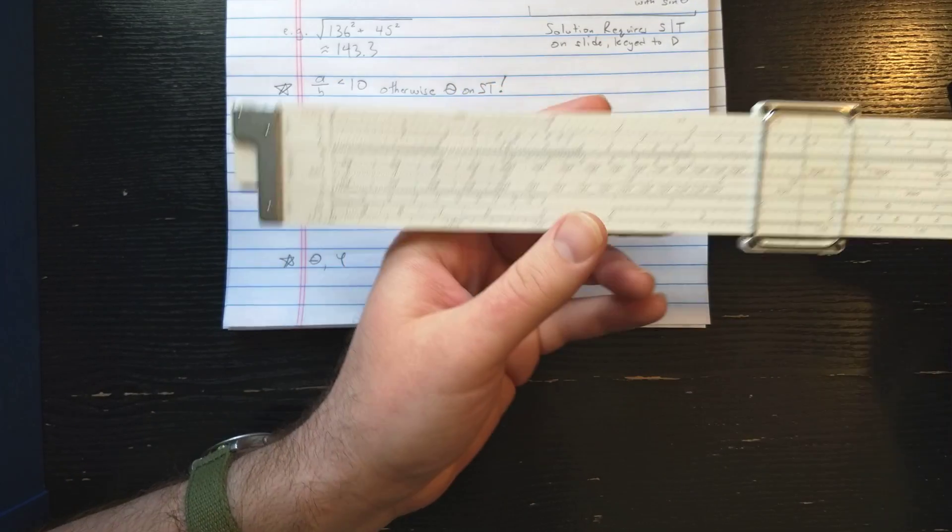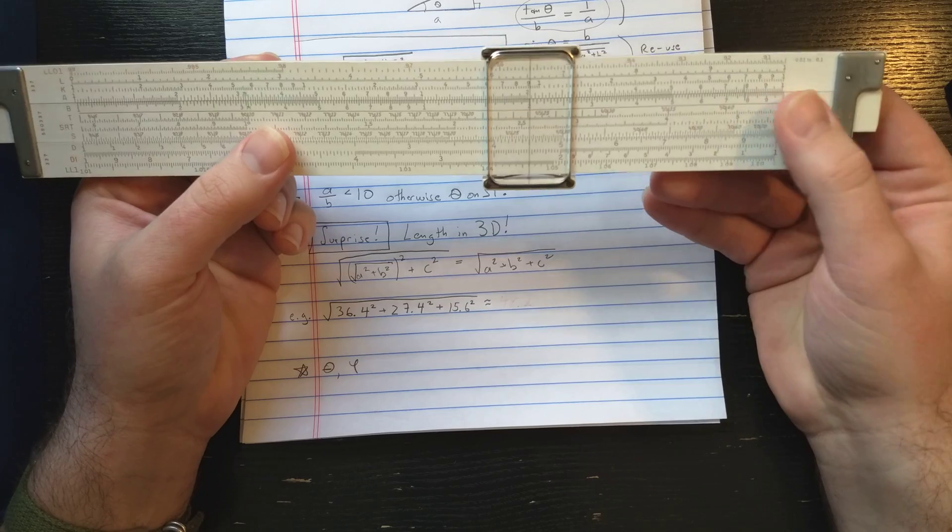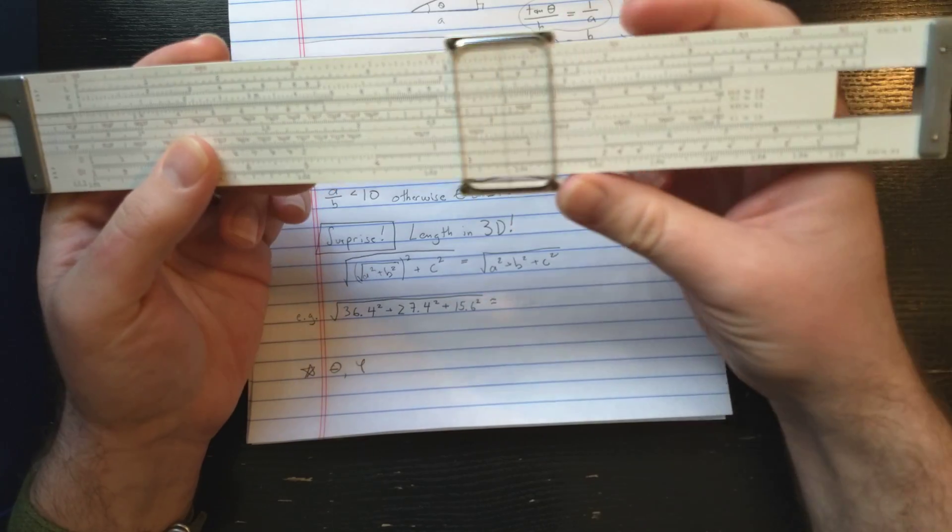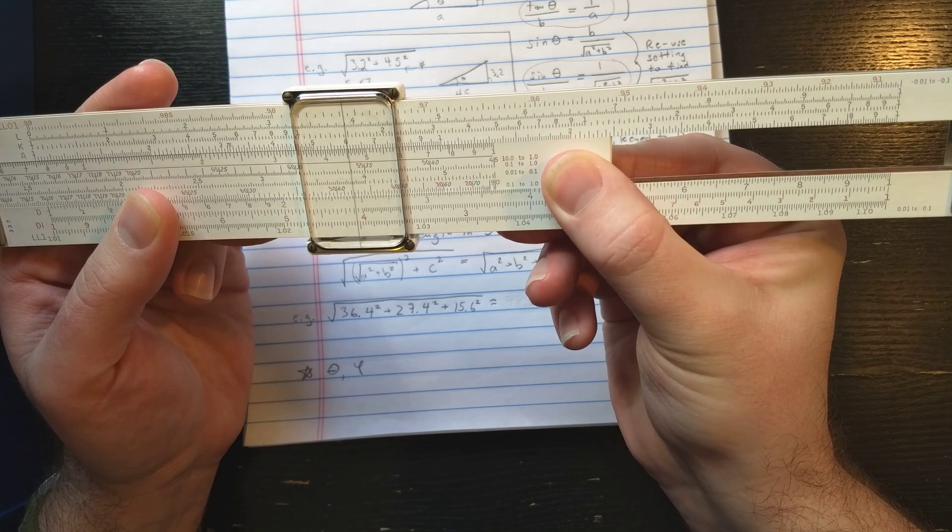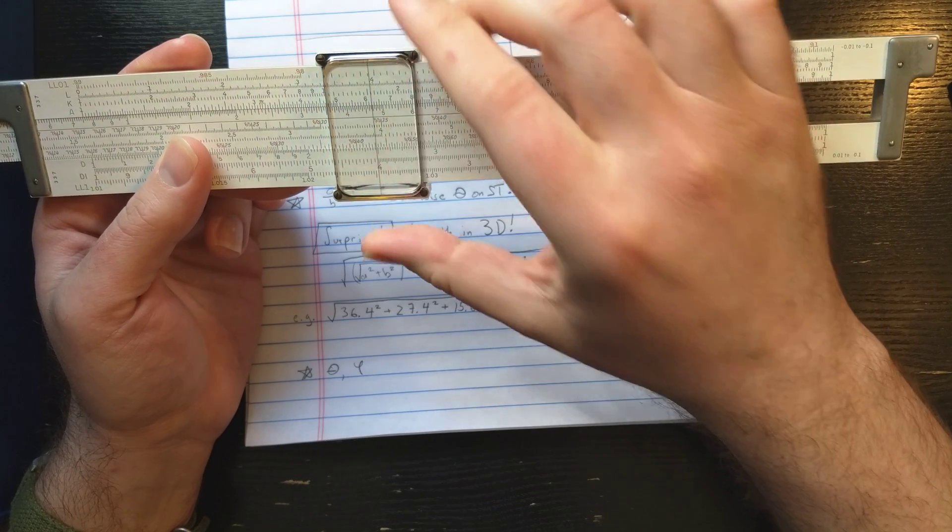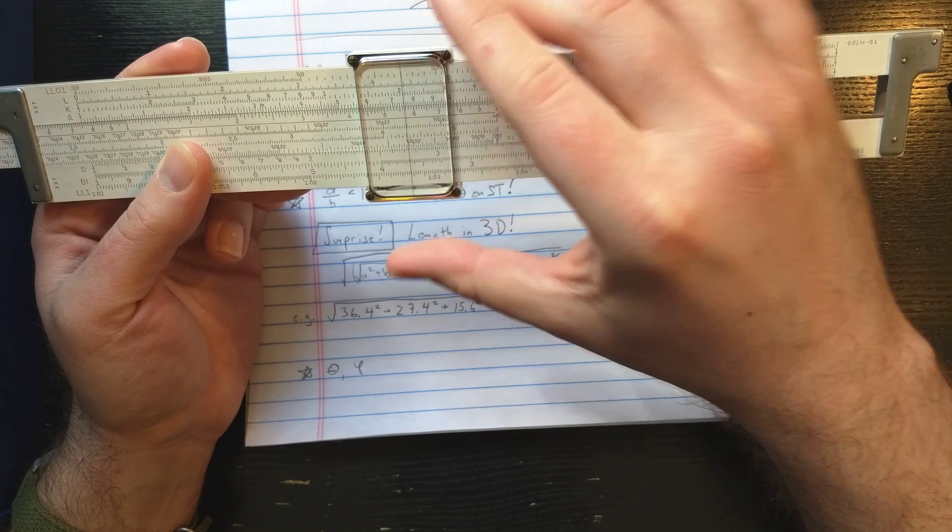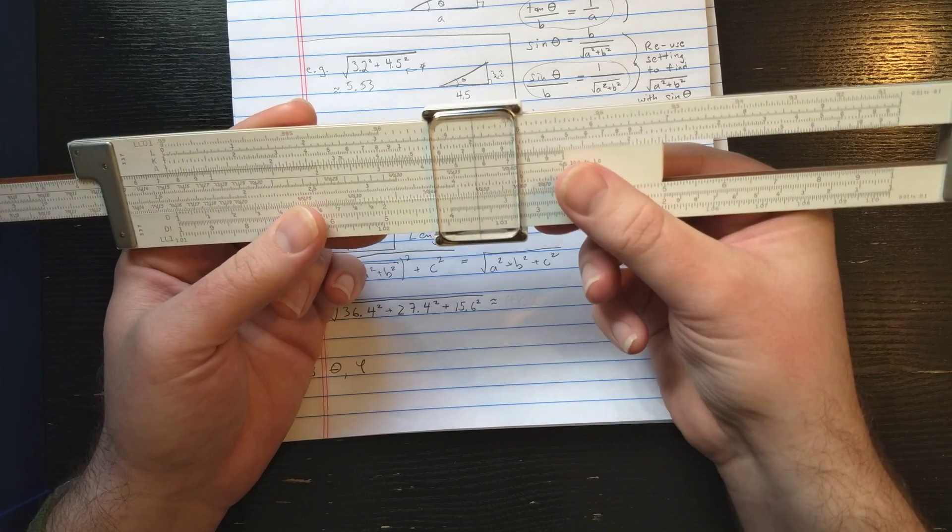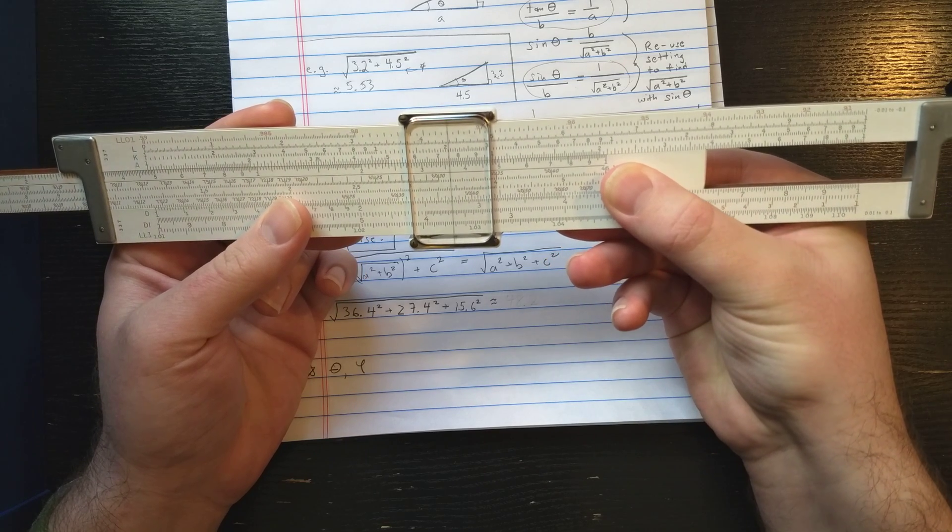So I'm going to start by setting 36.4 under the index. I know I'm going to be using these numbers on D. So let's set this right index 36.4. Then I'm going to come to the 27.4 on D, 25, 26, 27.4. About there. I see on the T scale angle, it looks like 37 degrees. So let's move 37 degrees under the hairline on S 35, 36, 37.